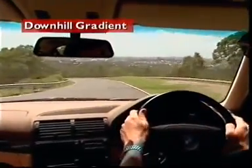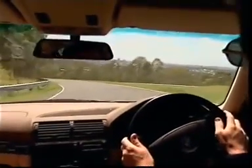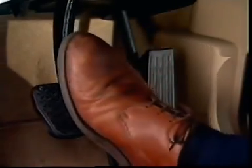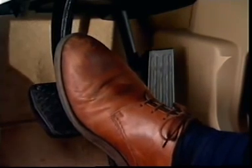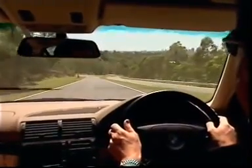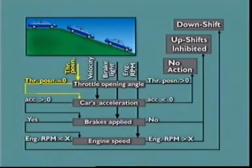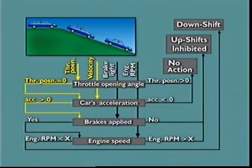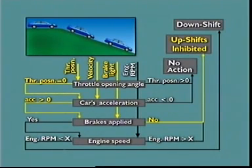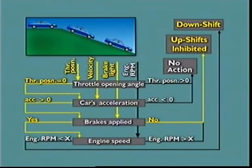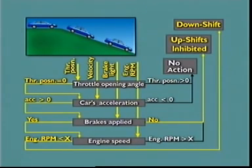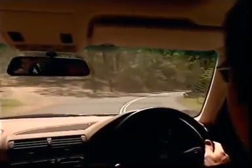On a downhill gradient, if an upshift occurs when the accelerator is released, there is no engine braking. To stop, the driver would need to apply greater force to the brakes. And vehicle road speed tends to increase even if the accelerator is not touched. Identifying a closed throttle and increasing road speed causes the system to respond initially by preventing further upshifts. If brakes are then applied, a single downshift takes place. Downshift only occurs below a preset engine speed. This avoids application of peak engine braking torque. The downhill identification gradient mode becomes inactive once the accelerator is depressed again.